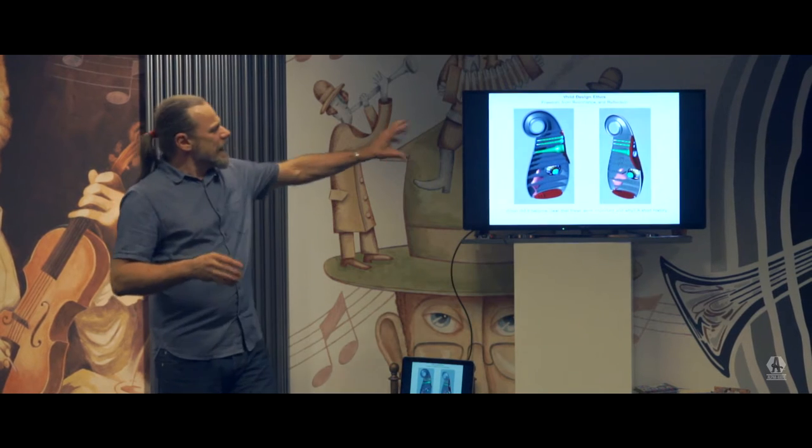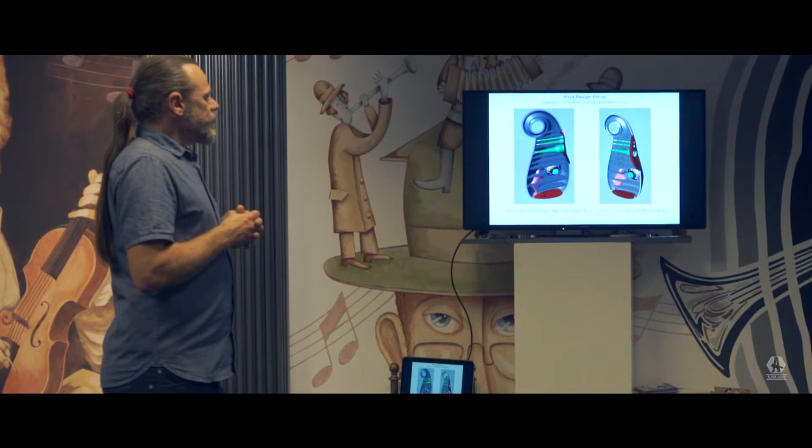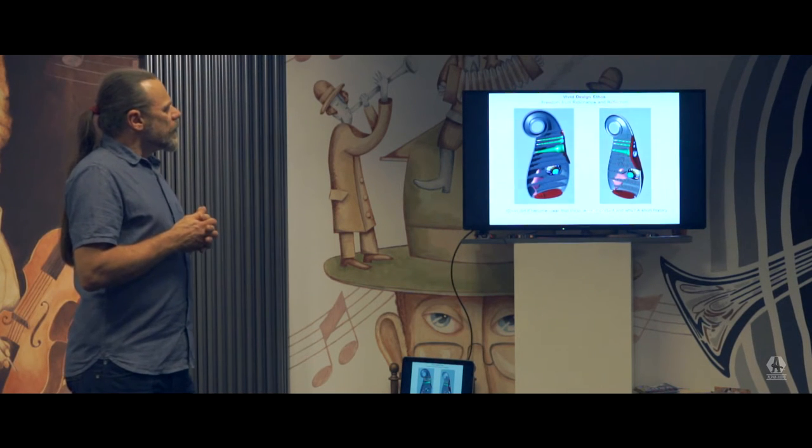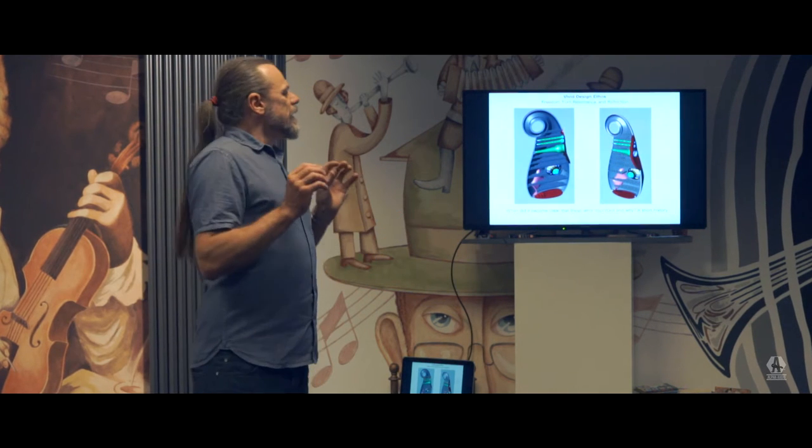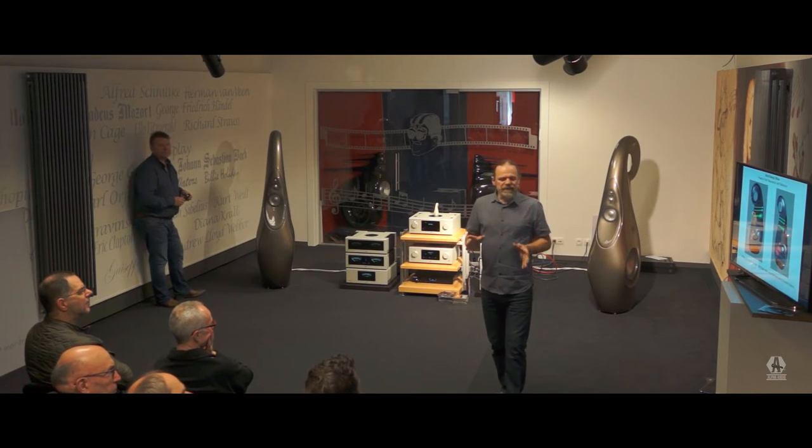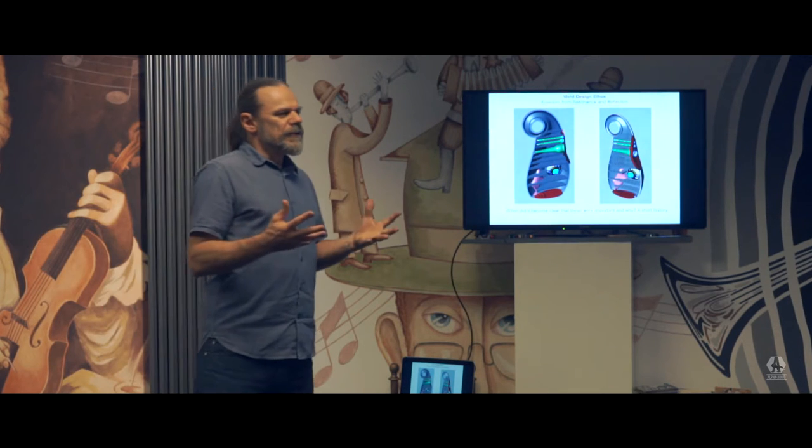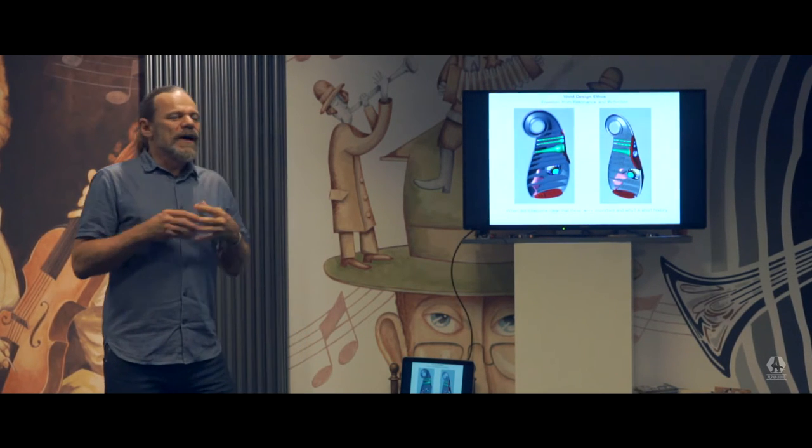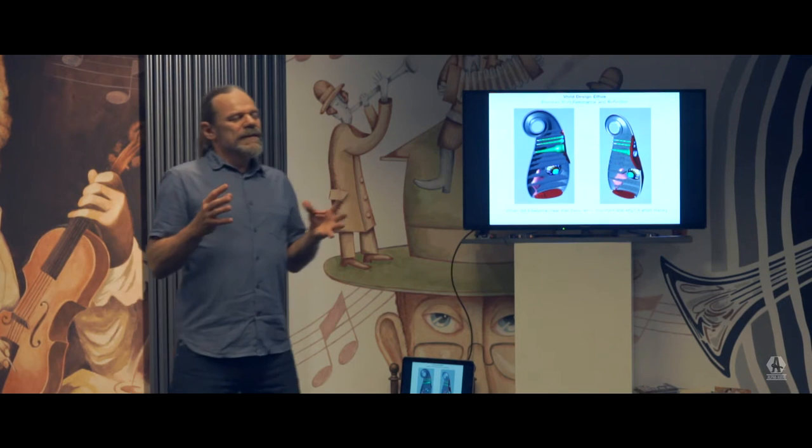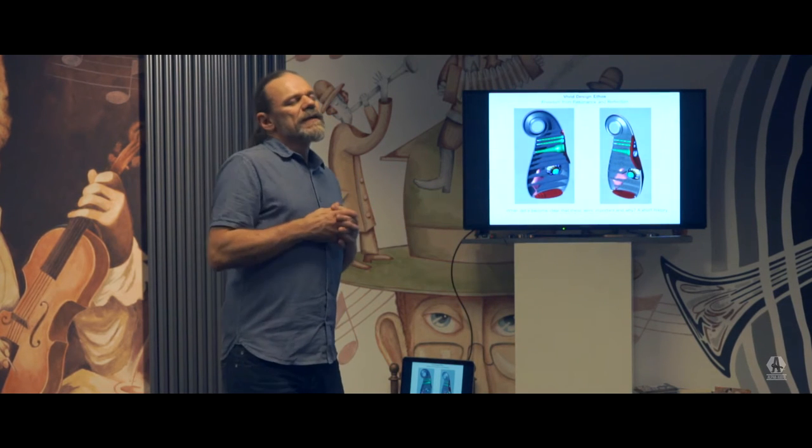When you look inside the Vivid Audio G1, it is no ordinary box. If there's a central philosophy to Vivid Audio design, it's that we try and create loudspeakers that are as free as possible from resonance and reflection. What is it about these two qualities that make them such an issue? I personally believe that we are incredibly sensitive to these two aspects of acoustics because we have evolved as humans and as animals before then to use our hearing to tell us an awful lot about the environment around us. It's literally a matter of life and death.